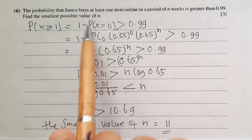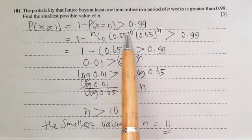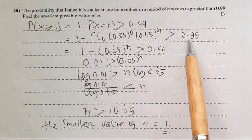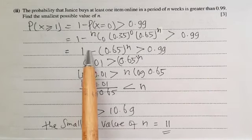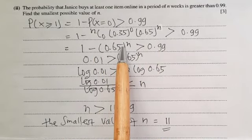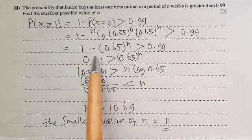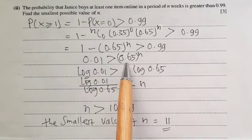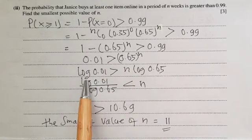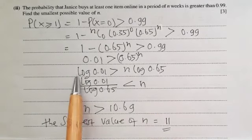1 − P(X = 0) > 0.99. Now P(X = 0) = nC0 × (0.35)^0 × (0.65)^n = (0.65)^n. So 1 − (0.65)^n > 0.99, which gives (0.65)^n < 0.01. Taking logarithms of both sides: log(0.01) > n × log(0.65).